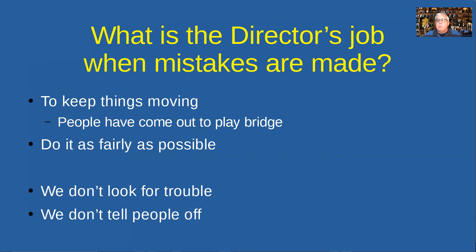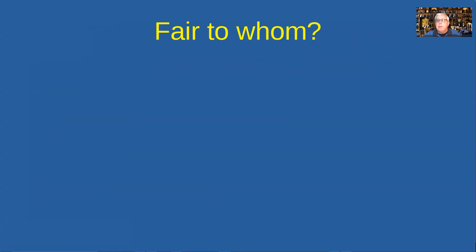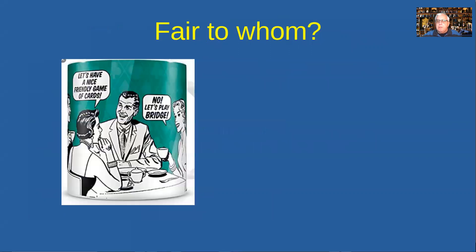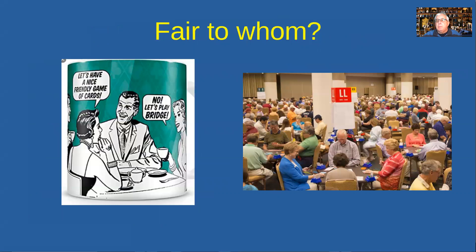We want to be as fair as we can — but who are we being fair to? We're used to thinking about kitchen bridge, four consenting adults who can do what they like. But as a director, you have to remember it's not just those four people involved — it can be a whole room full of people, and your decisions have to be fair to all of them.